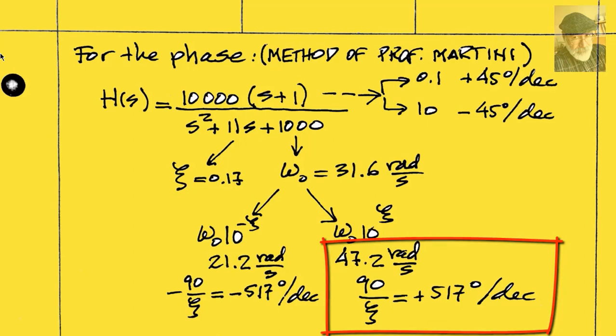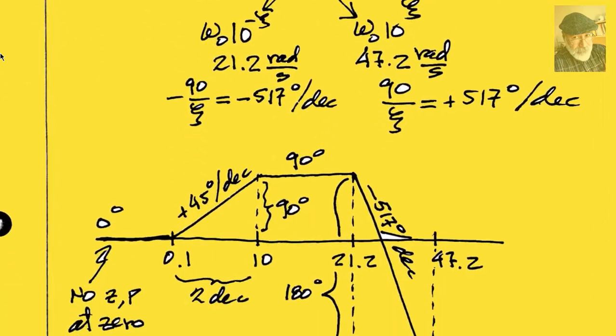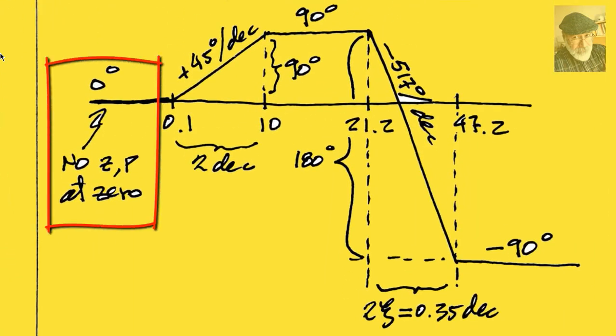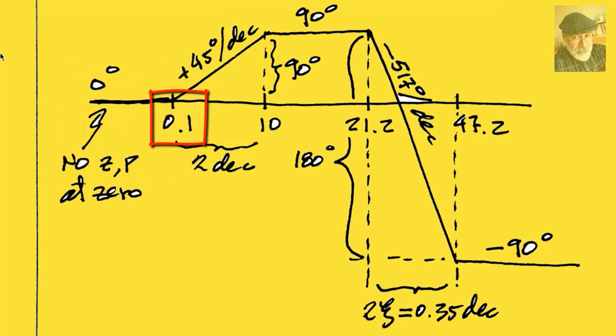We are ready to plot. The phase plot always enters as a horizontal line, but because there is no zero or pole at zero, it enters with a value of zero degrees. At the first corner, 0.1, it starts to climb up with a slope of 45 degrees per decade, up to 10, where the negative slope contribution flats the plot.